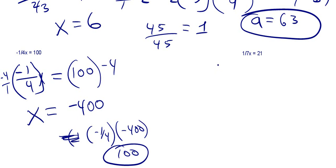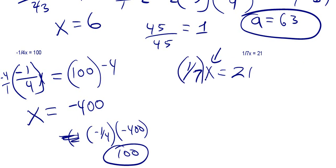Let's look at our last example: 1 seventh x is equal to 21. We want this x by itself, and we want it to be 1x. So what number times 1 seventh gives us 1? Well, 1 seventh times 7 is 1. If you want to write that 1 there, you can — if you don't, that's fine.